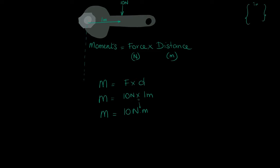Remember that moments is the turning effect of the force, and it is measured by multiplying the force by the distance from the pivot. Let's imagine that a force of 10 Newtons is applied 1 meter away from the pivot. By using the equation, we find that we have a moment of 10 Newton meters.